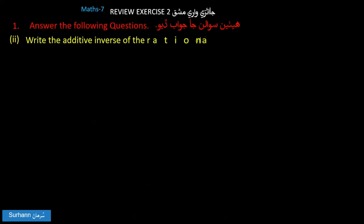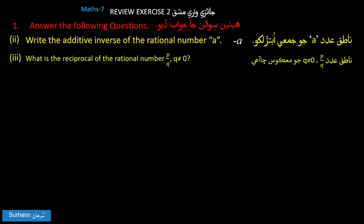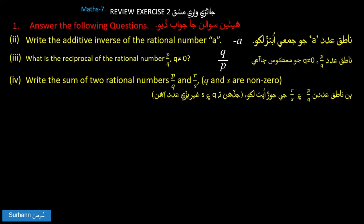Here is the total of the number A upon Q, where Q is not equal to 0. Write the sum of the two rational numbers B upon Q and R upon S, where Q and S are not equal to zero.